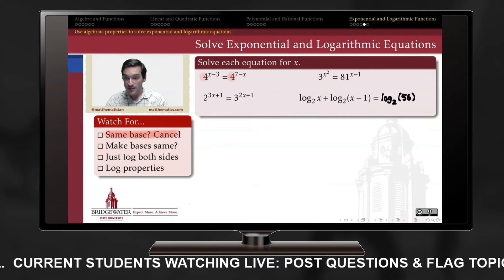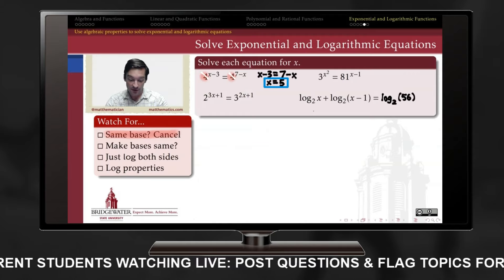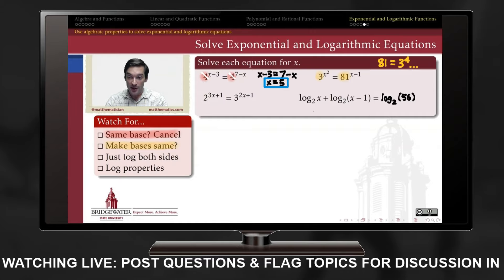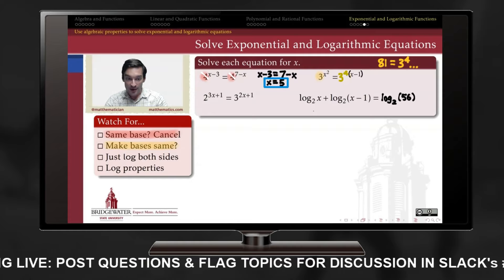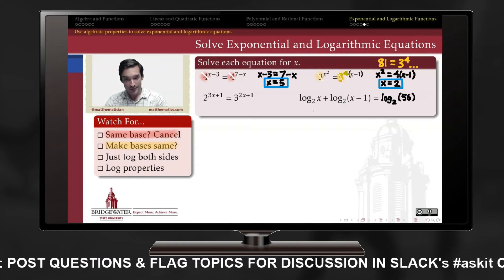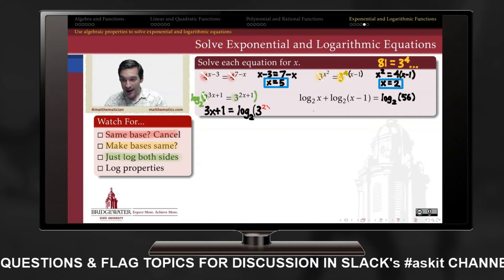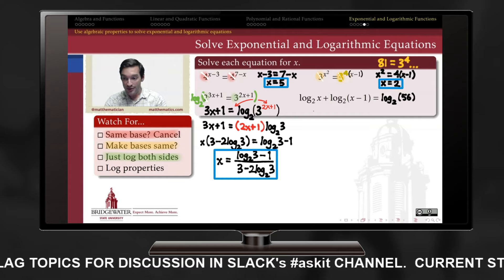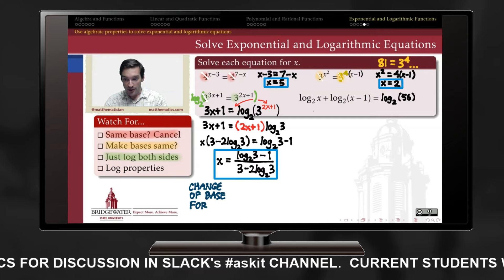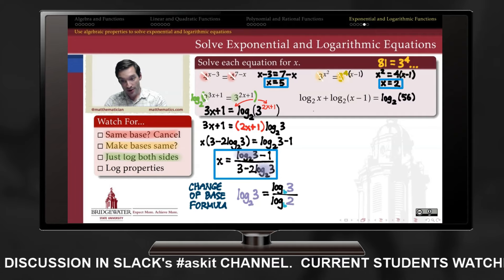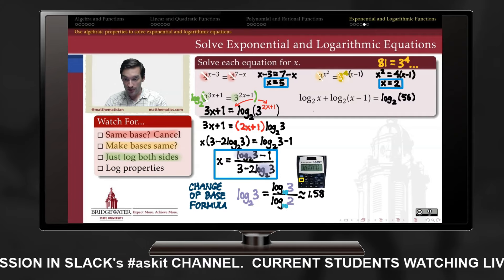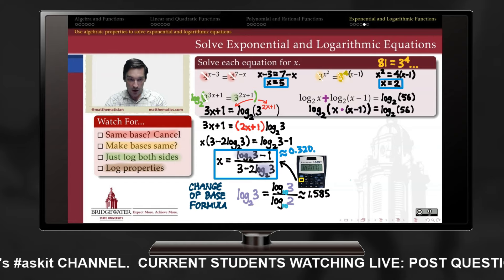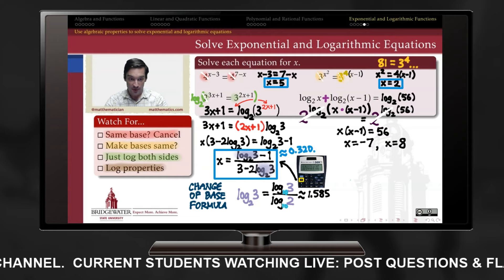An exponential equation with a common base on both sides can be solved by equating the exponents, since all exponential functions are one-to-one. When there's no obvious way to match bases, taking any logarithm rescues the variable from the exponent, and properties of logarithms make a solution possible. The change-of-base formula lets us evaluate a logarithm whose base is unknown to our calculators by dividing the log of our quantity by the log of our chosen base. Always check answers for spurious solutions.